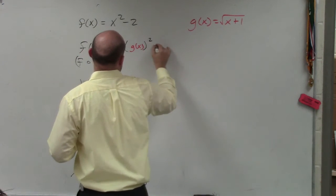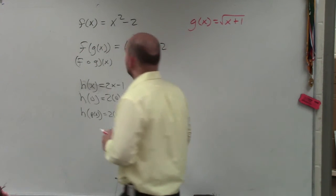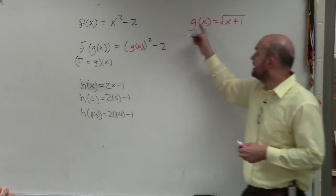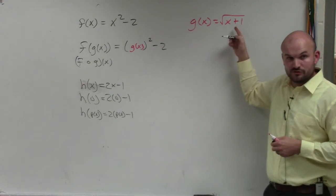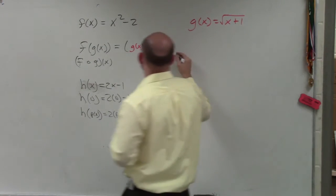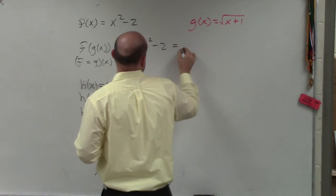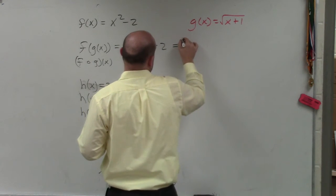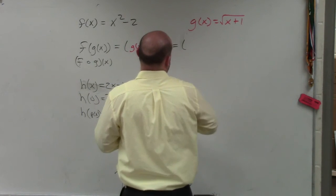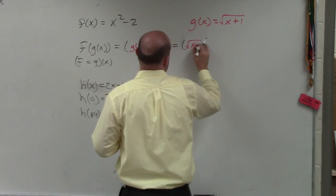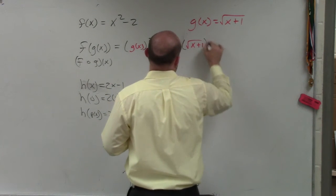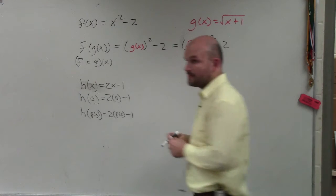This example is basically asking us to take my f of x function and then plug in g of x. So it's really saying: what is g of x? I'm going to plug that in — squared minus 2. Well, g of x, we actually have a function for g of x. g of x is the square root of x plus 1. So that's going to be the square root of x plus 1, squared, minus 2.